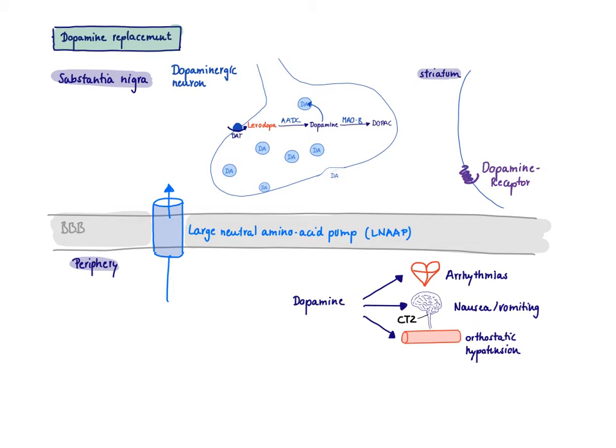What would it do in the periphery? Well, there are dopamine receptors on the heart, so you would get arrhythmias. There are also dopamine receptors in the chemoreceptor trigger zone, and if we stimulate them, that leads to nausea and vomiting. The chemoreceptor trigger zone is very poorly protected by the blood-brain barrier, so we're going to have some activation there inducing nausea and vomiting. There are also dopamine receptors on the peripheral vasculature. These are Gi-coupled receptors, so you're going to get vasodilation leading to orthostatic hypotension.